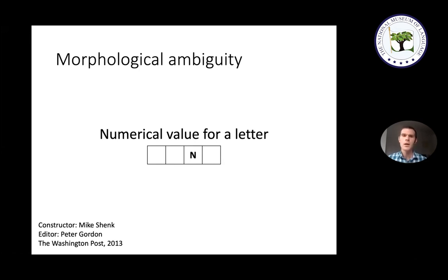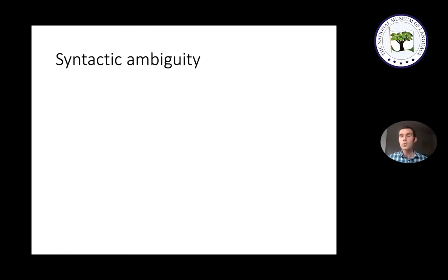Another example of this morphological ambiguity is the clue 'numerical value for a letter.' You'll probably first interpret this as some kind of code where you replace each letter with a number — but that's wrong. The correct interpretation requires looking more closely at the word 'letter.' Normally it's a single morpheme, but here it has two parts: the stem 'let' plus the suffix '-er,' meaning someone who lets, as in letting out an apartment. So a 'letter' is a landlord, and a numerical value for a landlord is RENT.